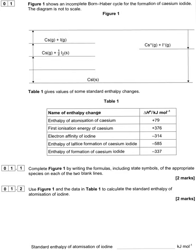This first question is about Born-Haber cycles. We've got the Born-Haber cycle showing the formation of caesium iodide solid. It's a typical cycle: the enthalpy of formation goes downwards — exothermic — then we have the atomisation of the first element, atomisation of the second element, the ionisation energy of the metal, the electron affinity of iodide (exothermic), and the lattice formation enthalpy also pointing downwards — exothermic.